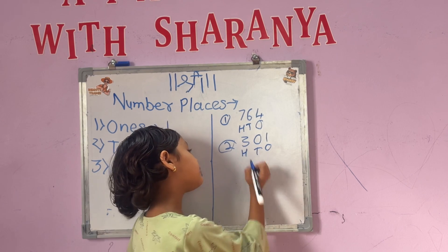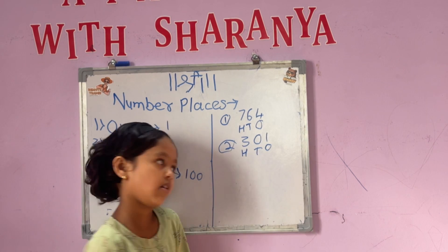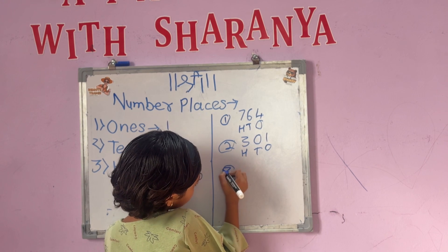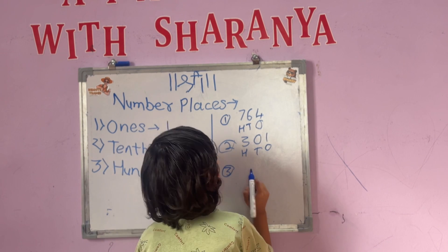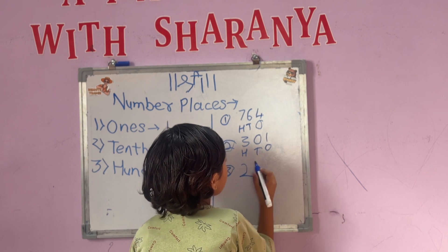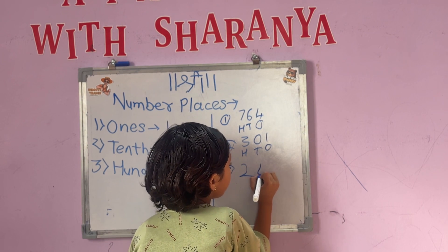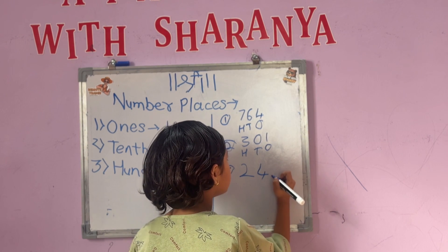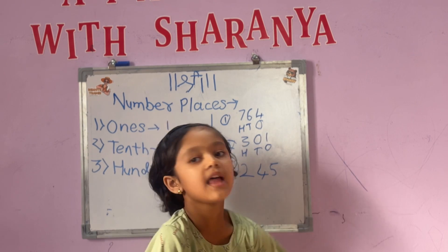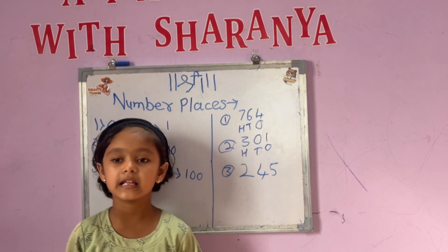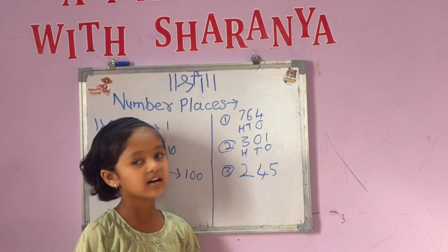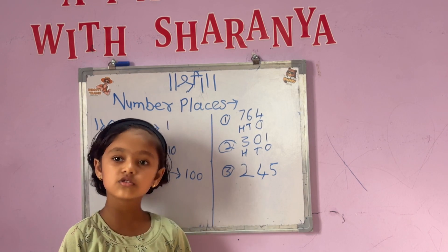Now take the third example. The third example is 2, 4, and 5. In that, the 1st place is 5, the 10th place is 4, and the 100th place is 2.